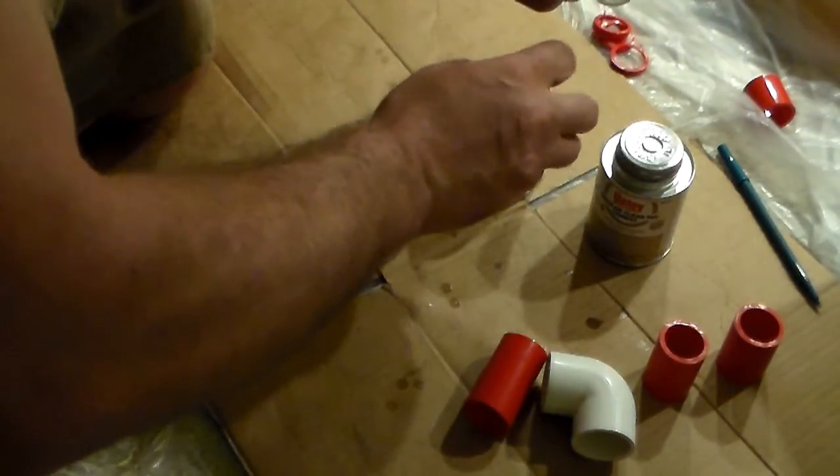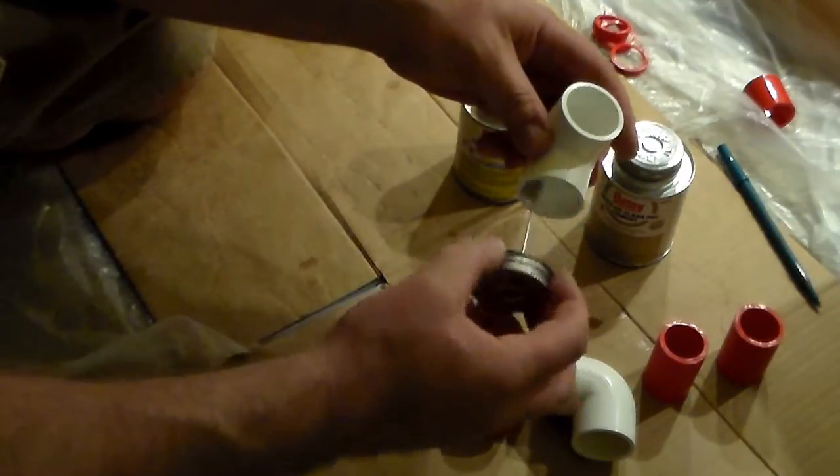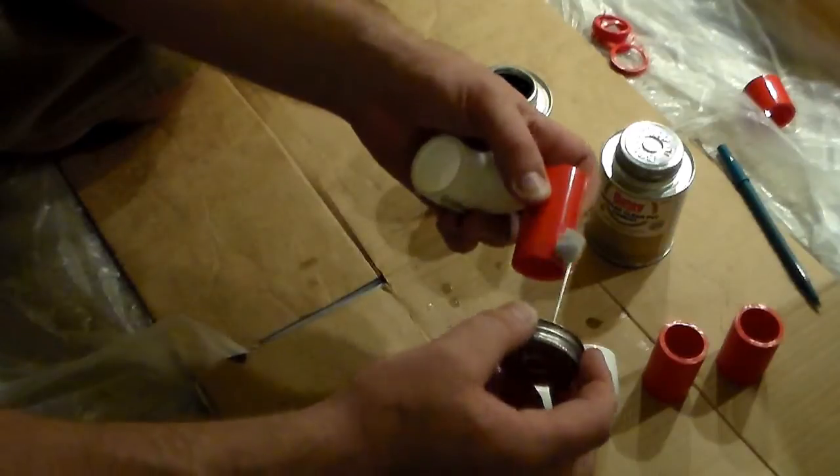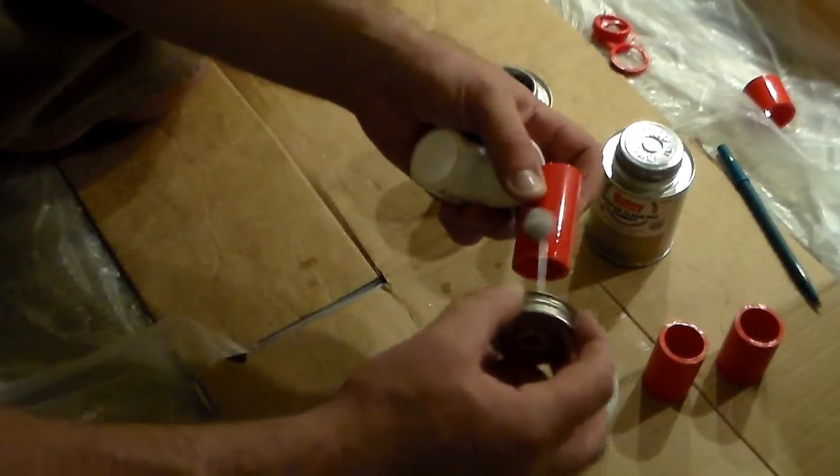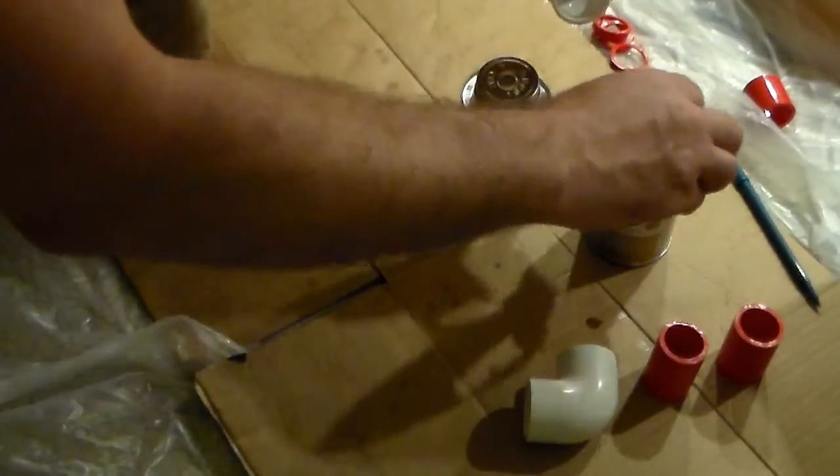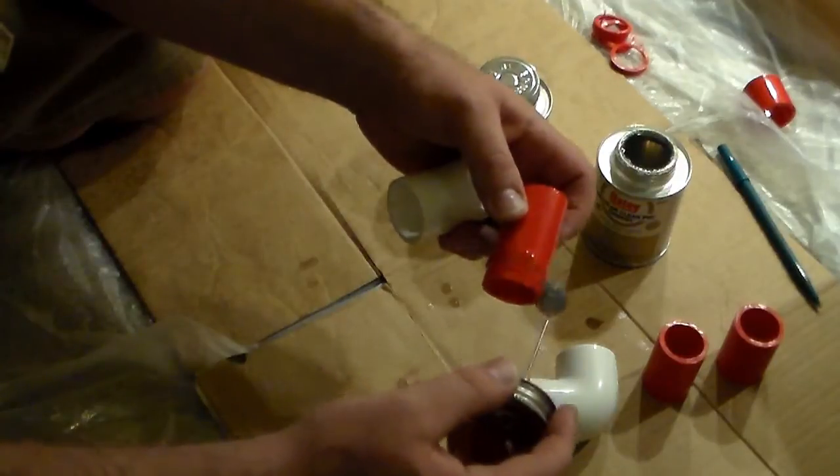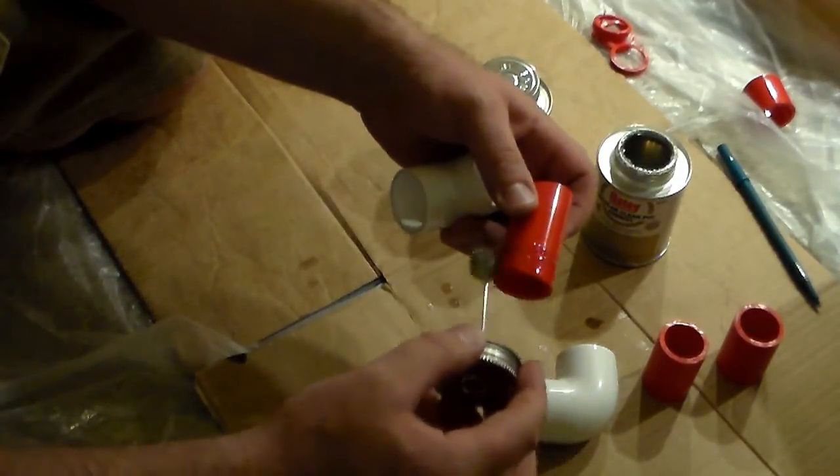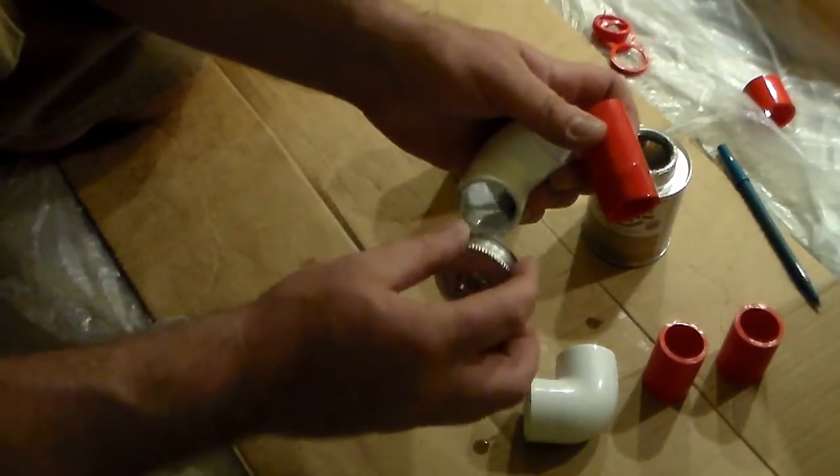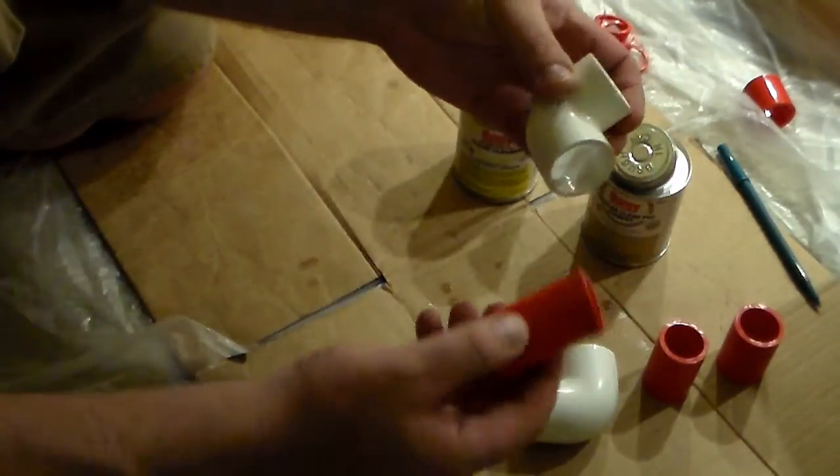So basically real quick here. Take your cleaner. Clean the fitting all around. You don't have to get too crazy. And then clean the pipe in the same area. Put that in there. You take your cement. Again, I'm not going to get too crazy. But you want to make sure you wrap it. Same thing in the fitting. Two pieces.